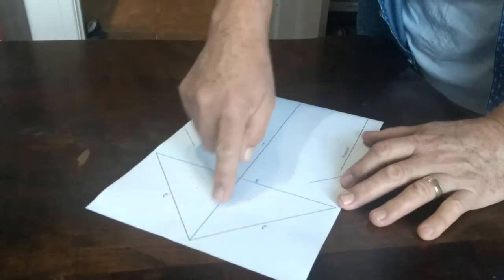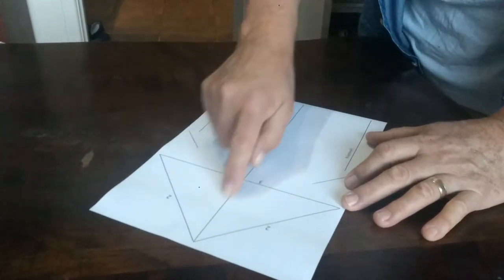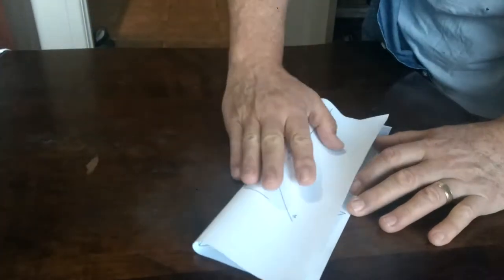Now to fold the paper aeroplane. Fold towards the lines. The first line is number one. Fold towards it.